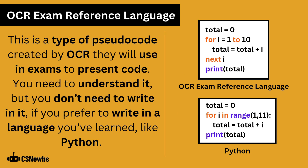OCR exam reference language is a type of pseudocode created by OCR that they will use in exams to present code. You need to understand it, but you don't need to write in it if you prefer to write in a language you've learnt like Python or Java. This isn't a real language and it wouldn't work if typed into a development environment, but as you can see in the example it is quite similar to Python. Section 3C in the specification document lists all the OCR exam reference language you need to know, and there's more about this later in the video.